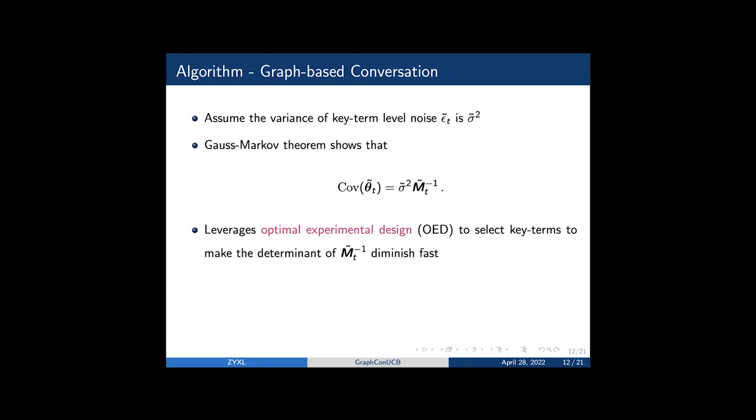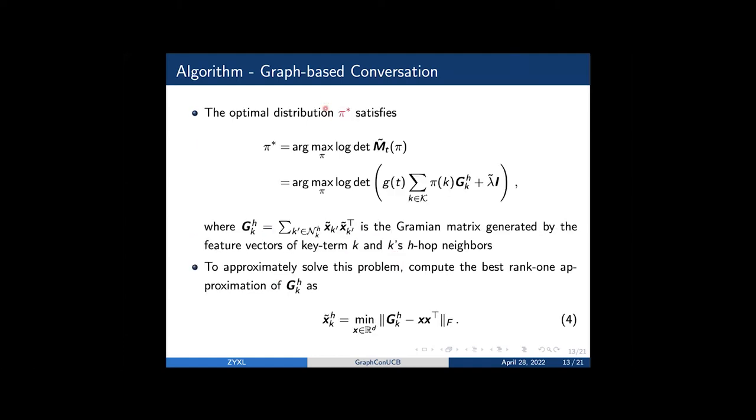We leverage the optimal experimental design to select the most informative key terms, which makes the determinant of the inverse of tilded M T diminish fast. Specifically, we aim to find an optimal distribution pi star that maximizes the determinant of tilded M T. Here GHK is the gram matrix generated by all the feature vectors of key term K's H-hop neighbors.